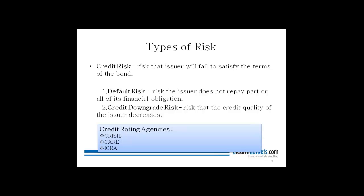To understand default risk, you should do a proper analysis of the company's financials, its past financial history, how it has met its debt obligations, and its payment history. The most important metric is the debt-to-equity ratio. If a company is heavily indebted, there is a very high chance it will not be able to meet debt obligations if it borrows more from the market. These are the important indicators of how much a bond is exposed to default risk.